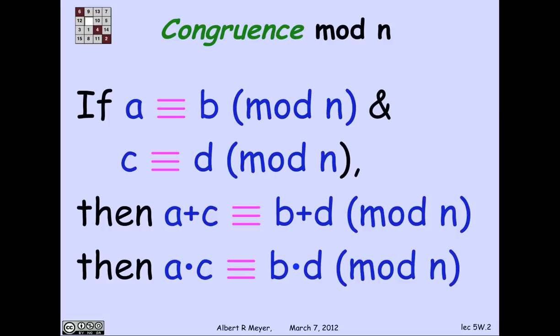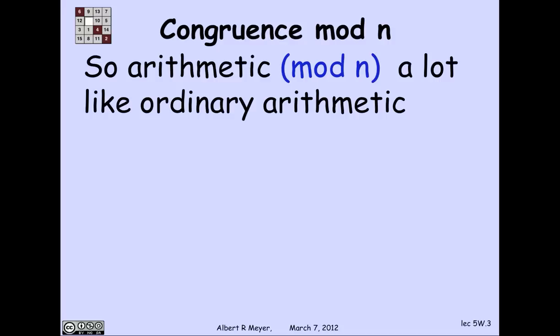So first of all, we've already observed that we have these basic congruence rules, that if a and b are congruent and c and d are congruent, then a plus c and b plus d are congruent, a times c and b times d are congruent. So that's the sense in which arithmetic mod n is a lot like ordinary arithmetic.